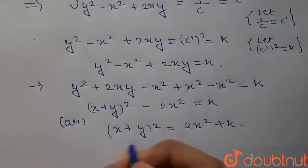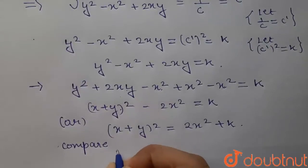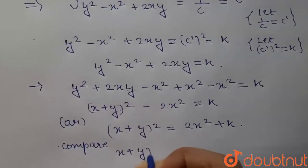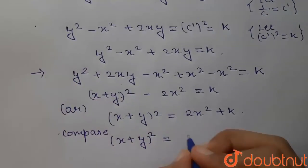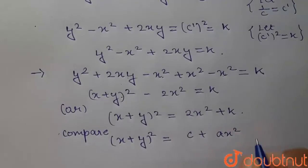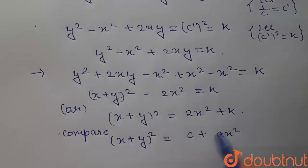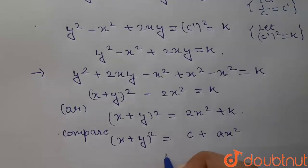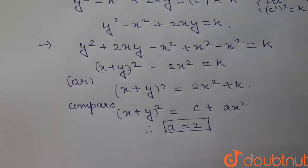Now comparing (x + y)² = 2x² + k with the given form (x + y)² = c + ax²: c is a constant and ax² corresponds to 2x². Therefore, the coefficient of x² gives us a = 2. This is the required answer. Thank you.